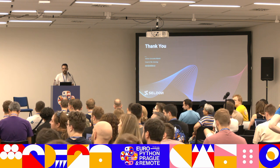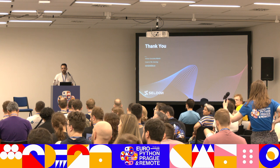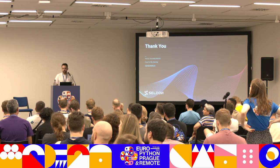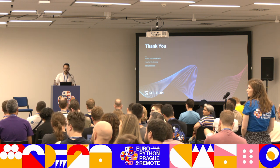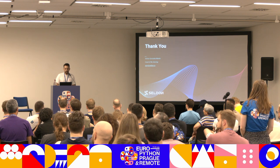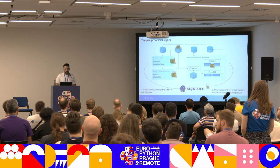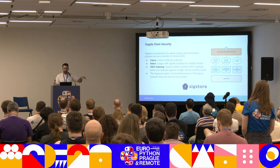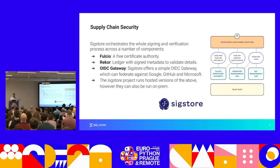Audience member: In your Sigstore example, there was a centralized key server where keys were uploaded. What exactly is the model information that gets uploaded? Not all development is open source and we can't always upload private stuff. Adrian: Totally agree. In our example we used the hosted versions of Fulcio and Rekor for simplicity, since Sigstore has many moving pieces — Fulcio, Rekor, and OIDC gateway integration. But generally in a production setting, you would just deploy those components internally and use that.